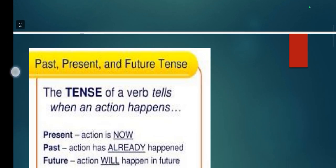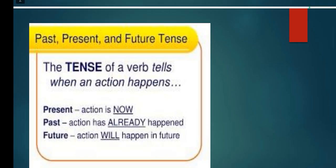Past, present, and future tense. The tense of a verb tells when an action happens. Present — action is now. Past — action has already happened. Future — action will happen in the future.